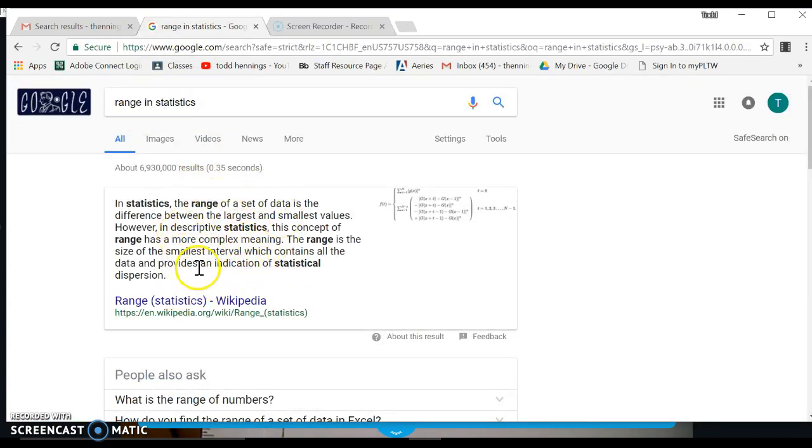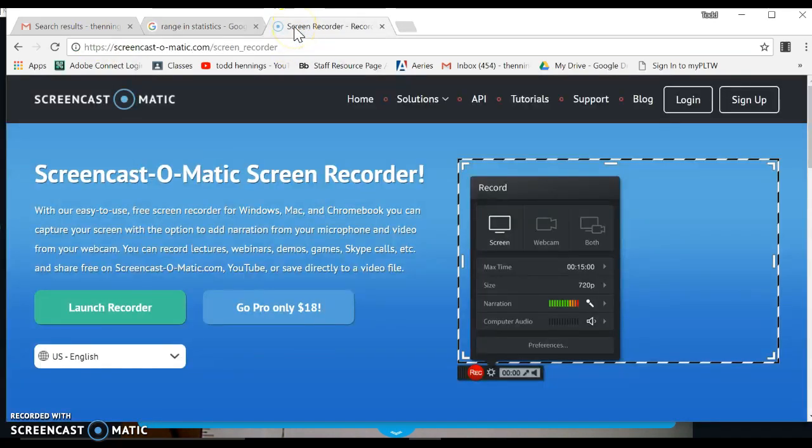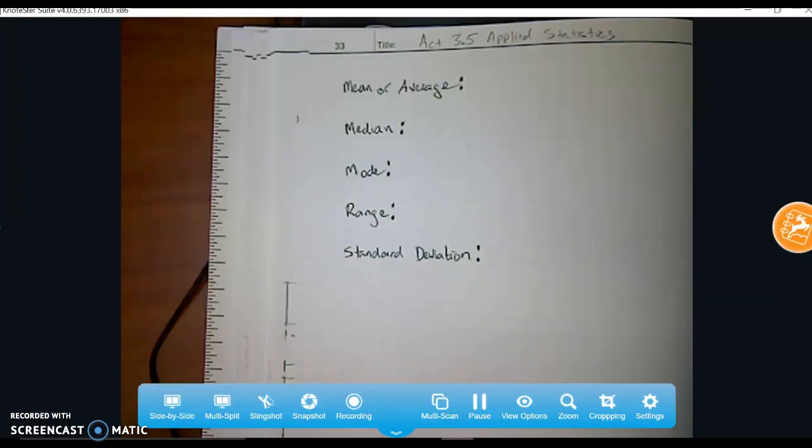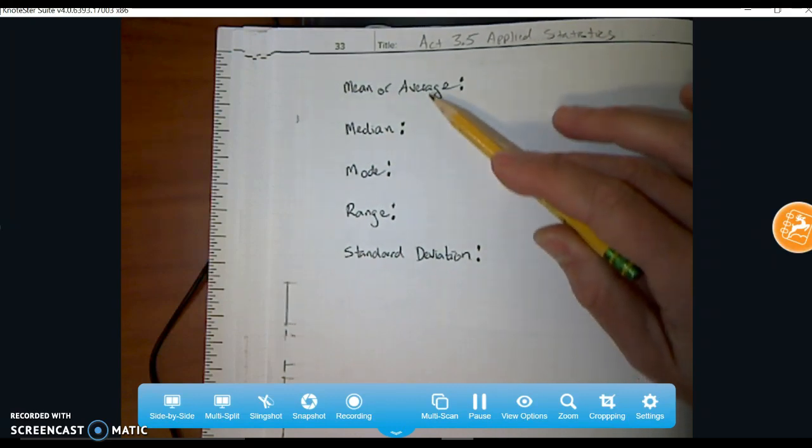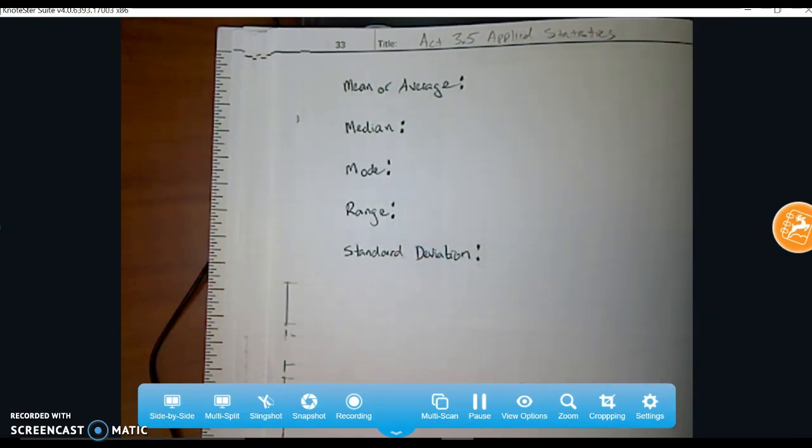Get what we're looking for. You don't have to copy all of this stuff. Put something that's meaningful for you. And you don't need equations in this. We're going to practice the equations together. So first thing you're going to do then is you're going to go ahead and put activity 3.5, applied statistics, define these five terms.